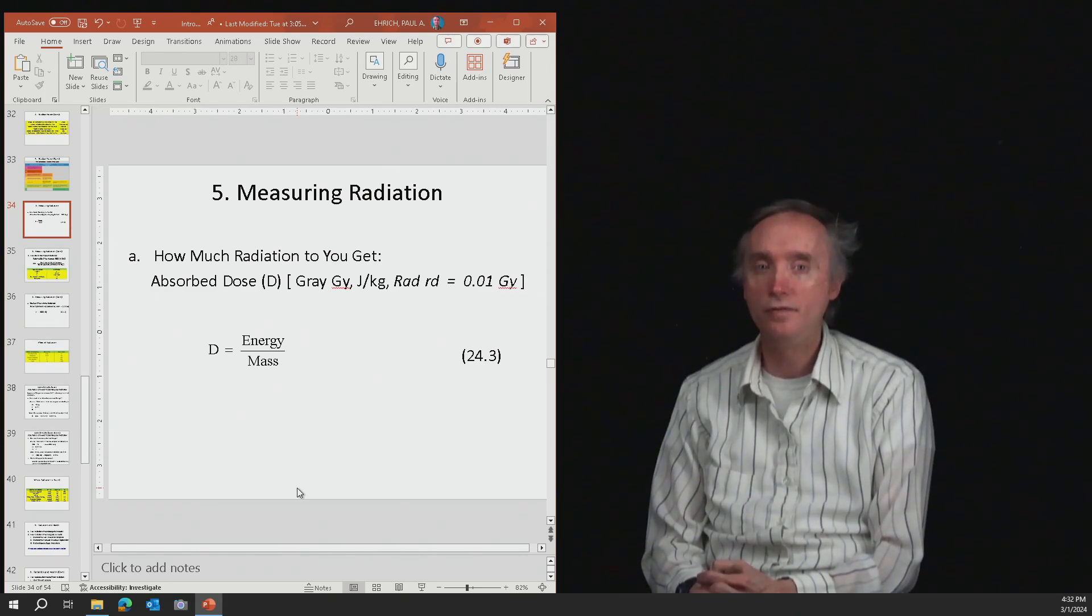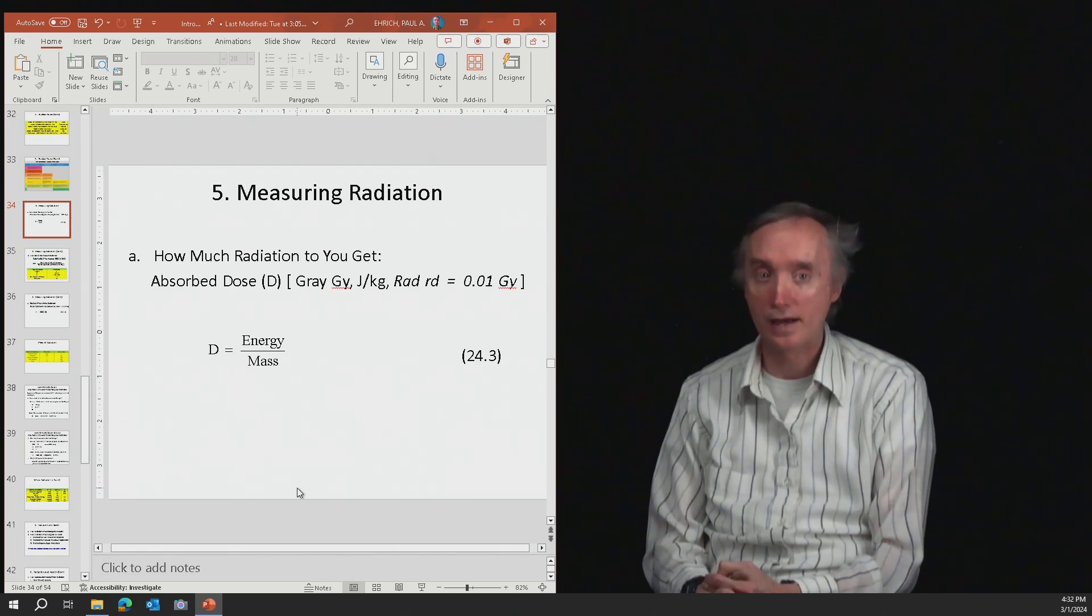It's going to be abbreviated with a capital D. So the formula says the dosage you receive is equal to the amount of energy you receive from the radiation divided by your mass.